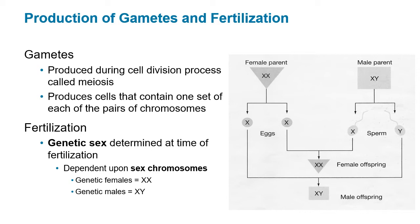Beyond the scope of this class: X sperm are bigger than Y sperm and live longer, but Y sperm swim faster because they're smaller. The actual sex ratio at conception is 120 males to 100 females, but by age 20 it's 100 to 100.